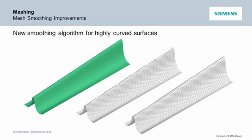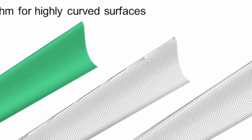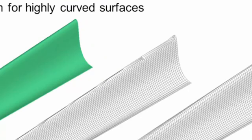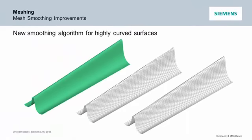We've also come up with a new smoothing algorithm. Our old smoother does a great job when the geometry is super curved, but sometimes the smoothing would cause it to relax and droop. We recoded that with a new, more 3D algorithm, so you now get better smoothing of meshes on highly curved structures.